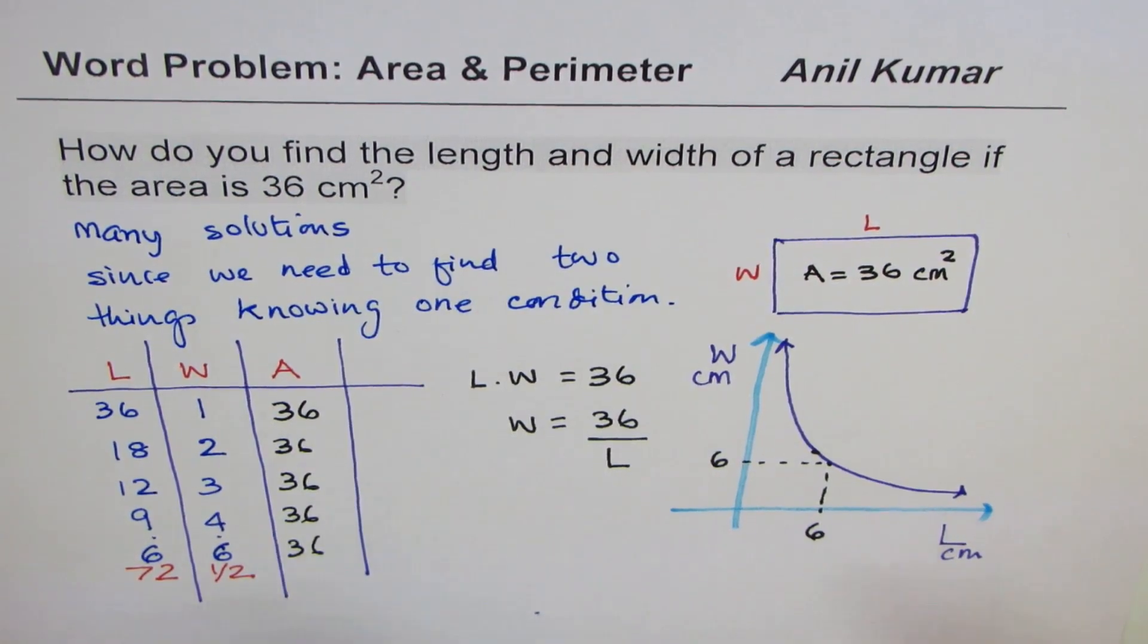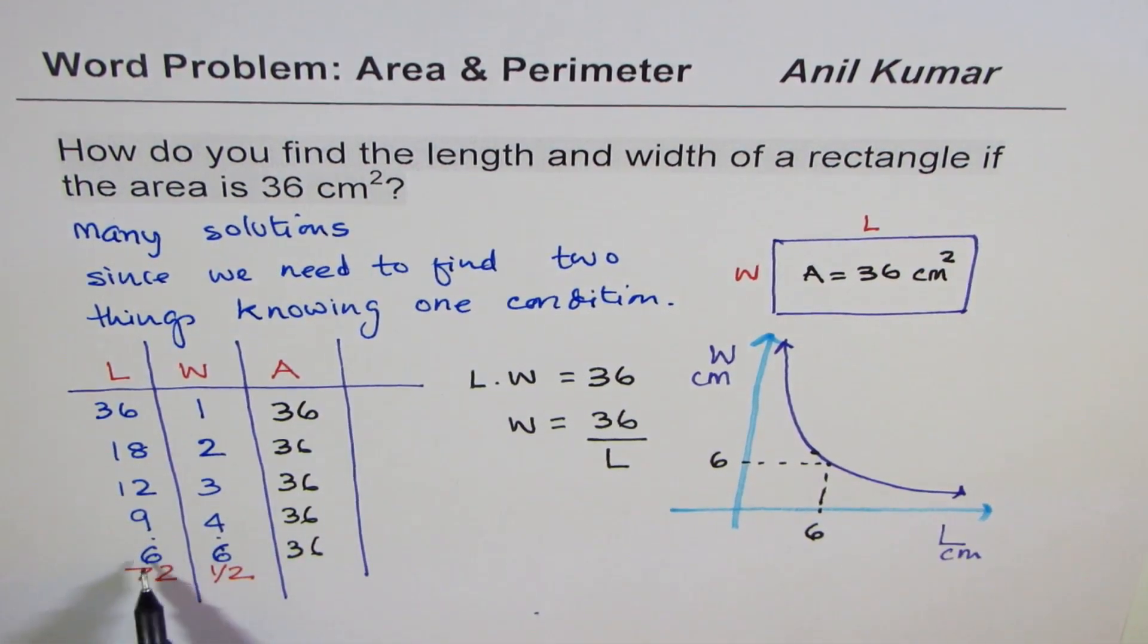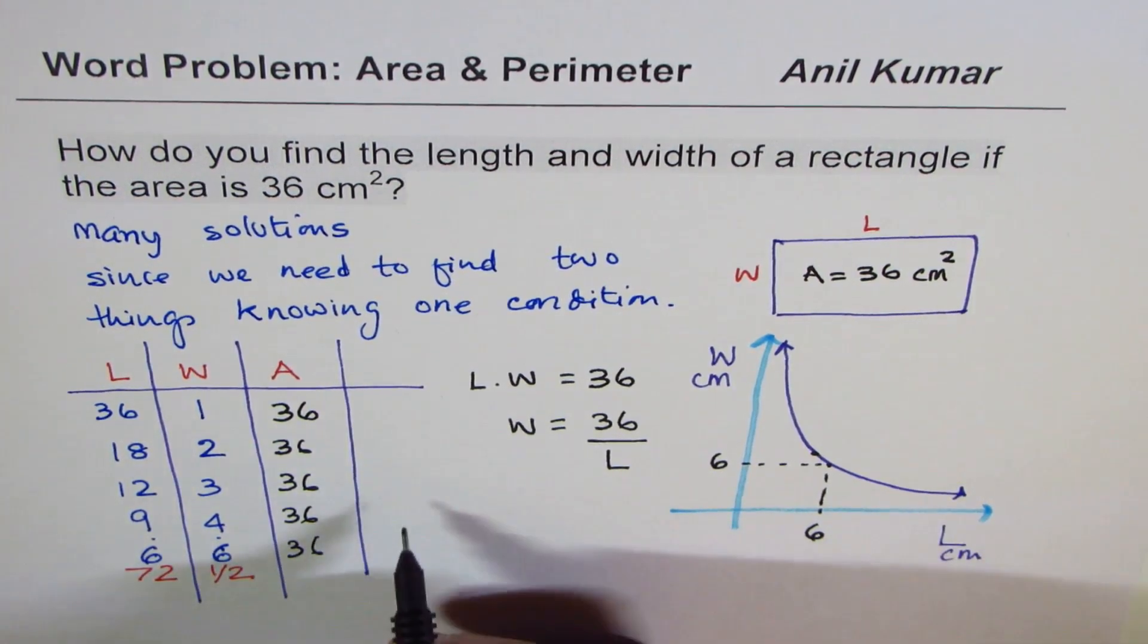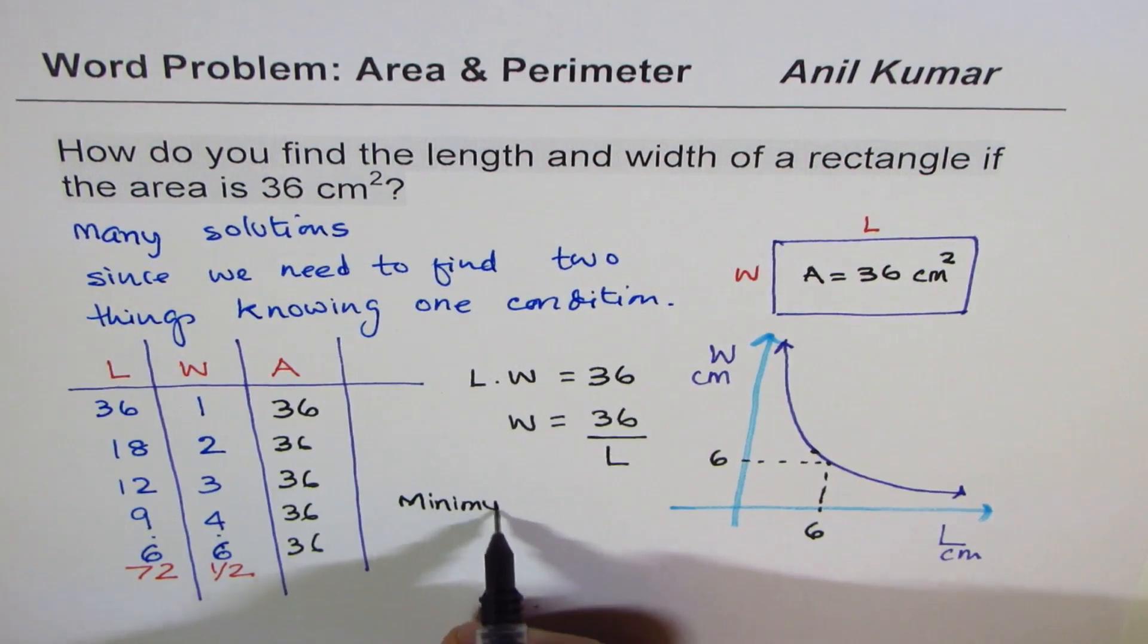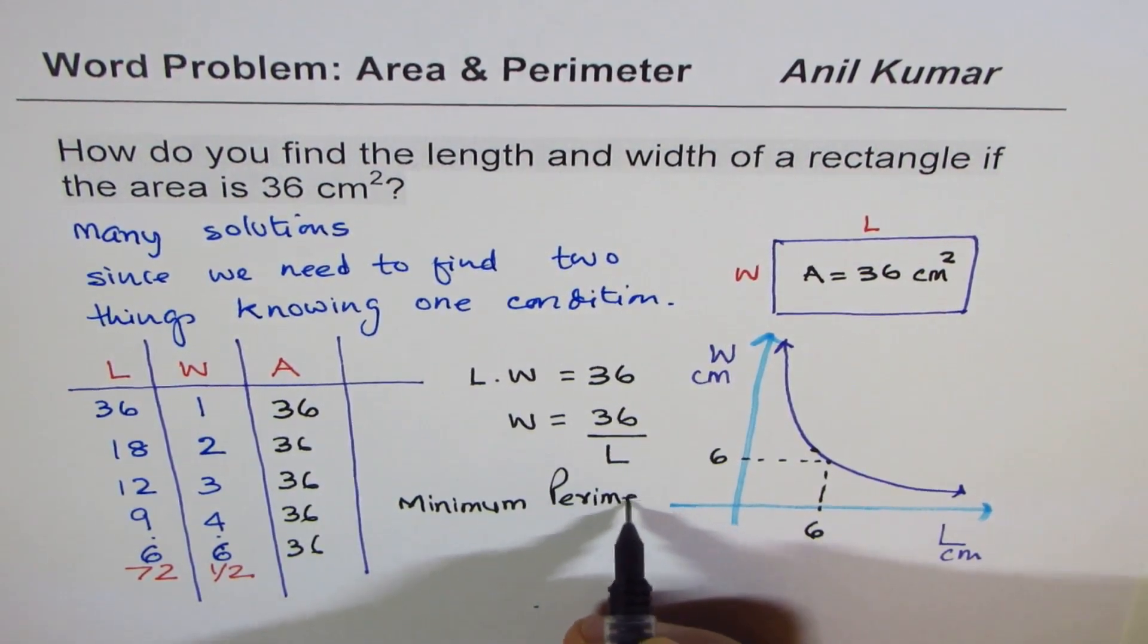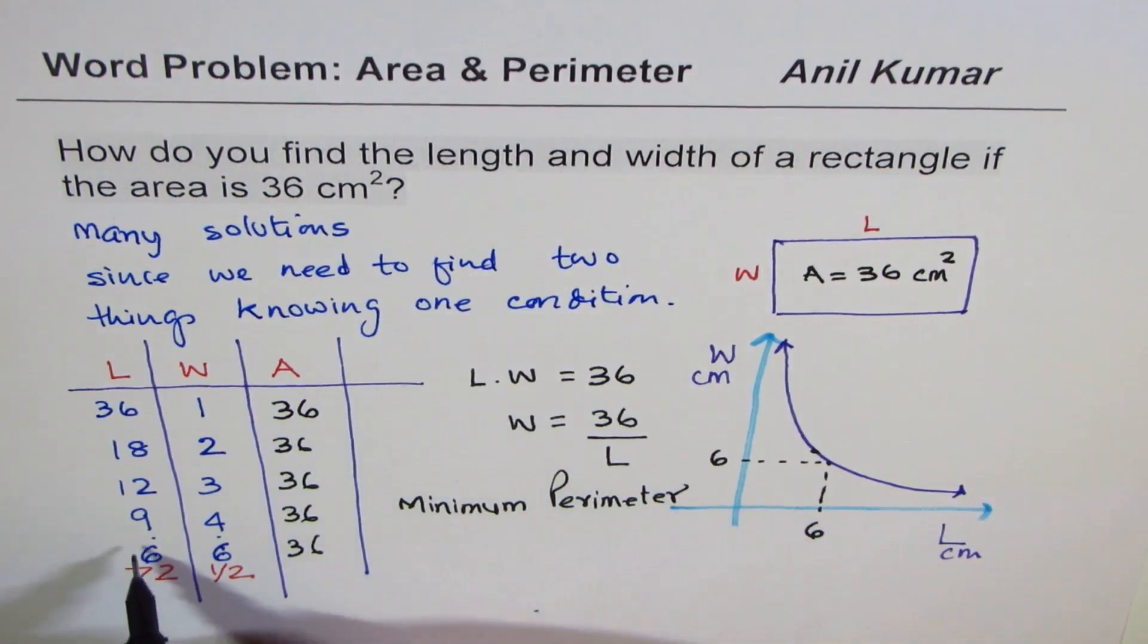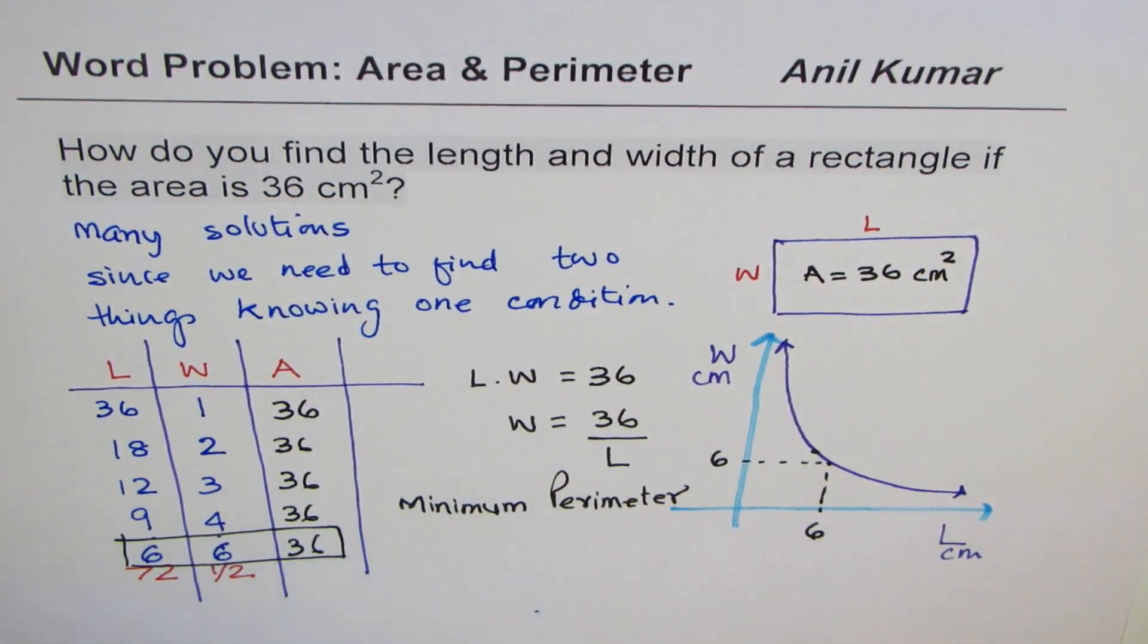If, however, I ask you, what dimensions will give me, let's say, if you add these 6 plus 6 is 12, 9 plus 4 is 13. So what dimension will give us minimum perimeter? Then the answer will be 6 and 6. A square will give me the minimum perimeter in this particular condition.